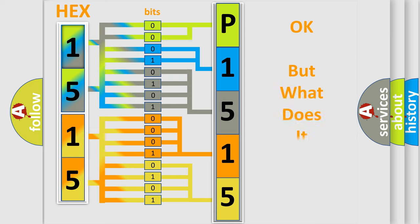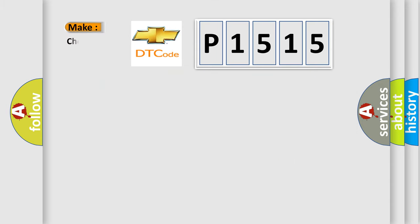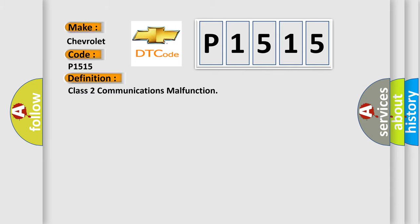We now know in what way the diagnostic tool translates the received information into a more comprehensible format. The number itself does not make sense to us if we cannot assign information about what it actually expresses. So, what does the Diagnostic Trouble Code P1515 interpret specifically for Chevrolet car manufacturers?